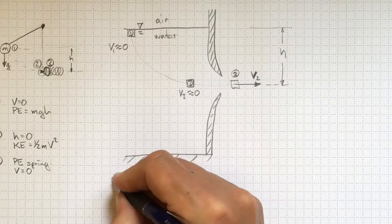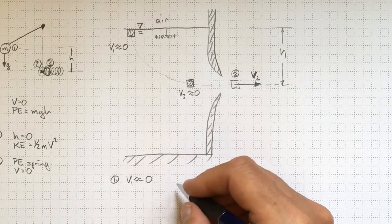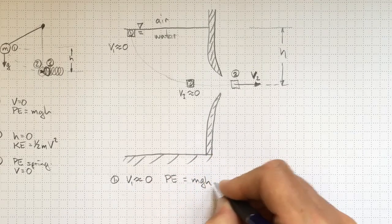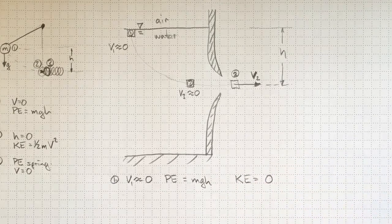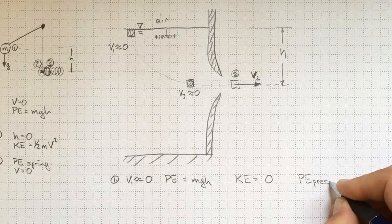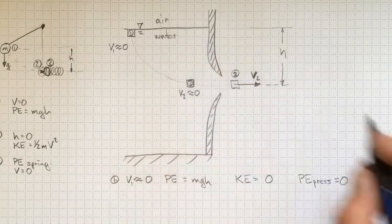So location one, v1 about equal to zero. So there's no kinetic energy. The potential energy is mgh. The kinetic energy is zero. And the potential energy associated with the pressure is also zero. Because this is our datum point at atmospheric pressure.